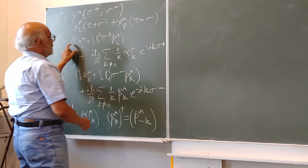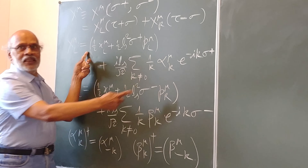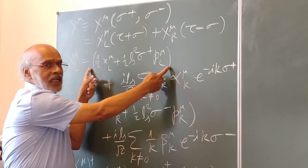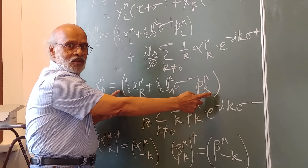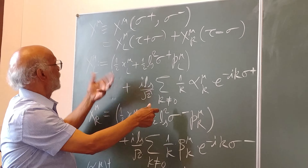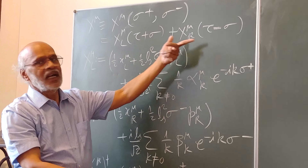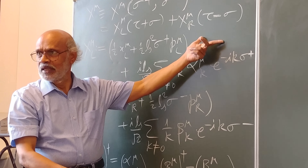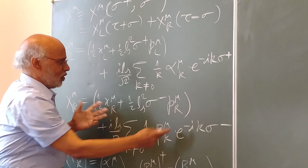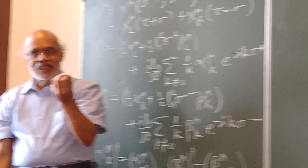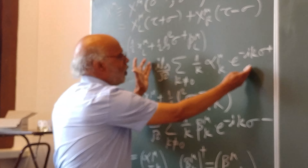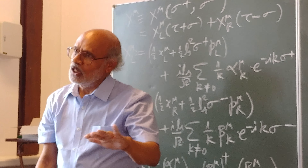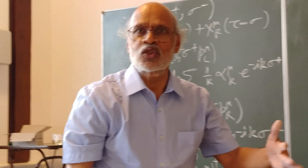This part in the string describes the center of mass motion of the string, and this also describes the center of mass motion of the string. So x mu is a sum of left-moving and right-moving parts. The sum of the first parts describes the center of mass motion, and the sum of the oscillation parts describes the vibrations of the string in the spacetime manifold.